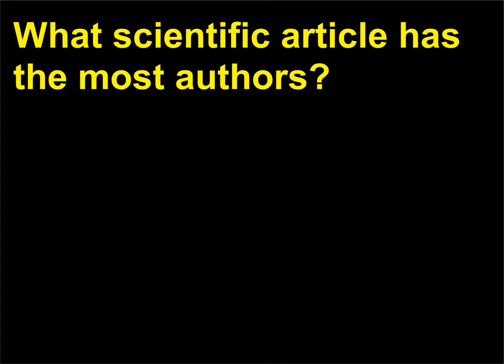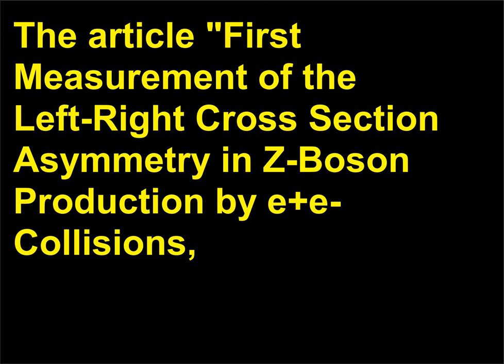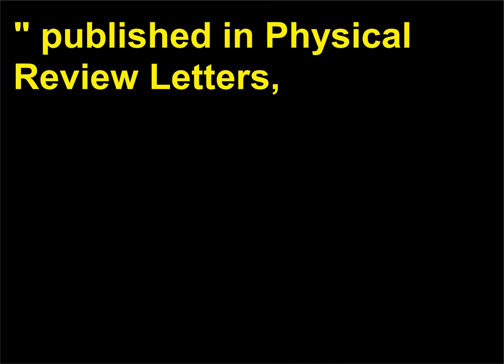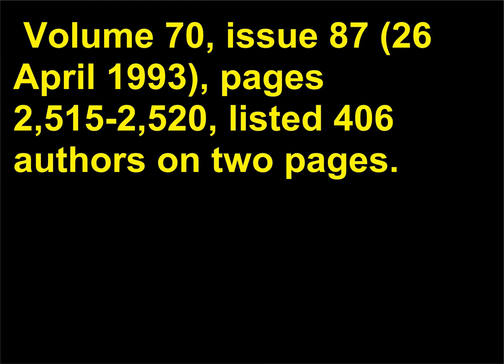What scientific article has the most authors? The article 'First Measurement of the Left-Right Cross-Section Asymmetry in Z-Boson Production by E+E- Collisions,' published in Physical Review Letters, Volume 70, Issue 87, April 26, 1993, pages 2,505 to 2,520, listed 406 authors on two pages.